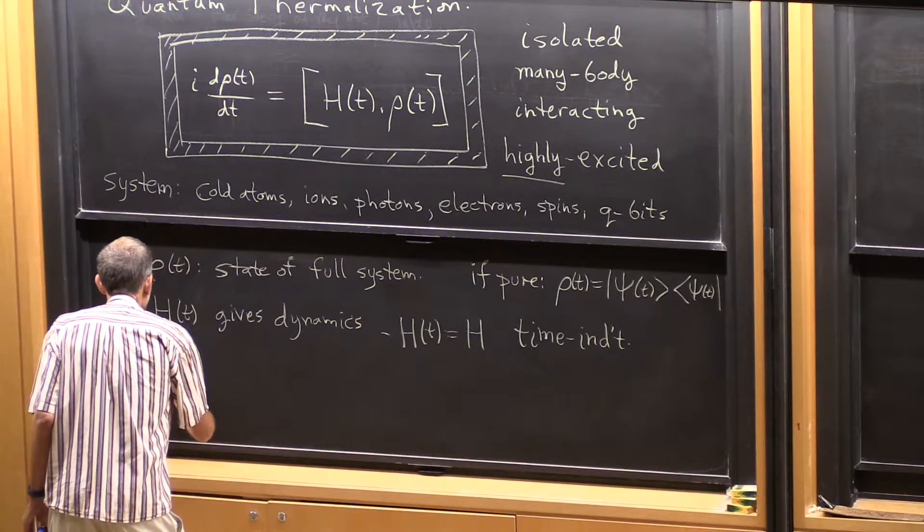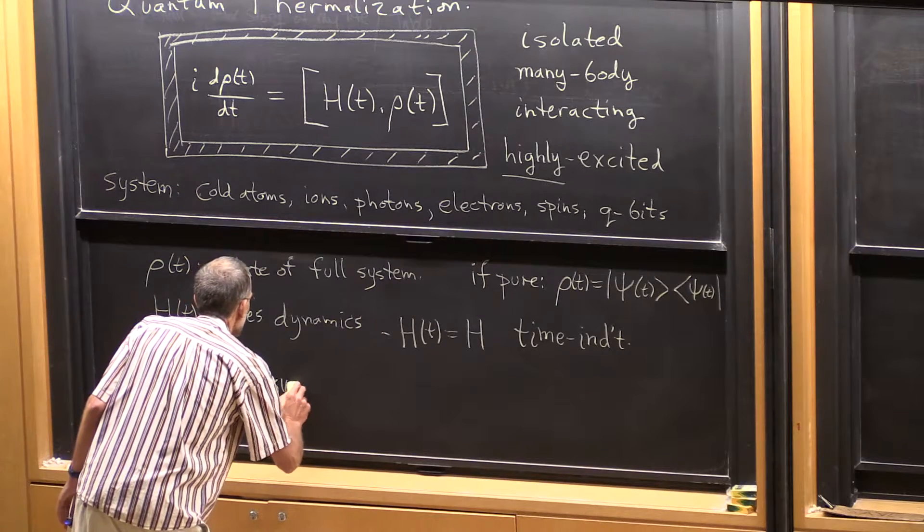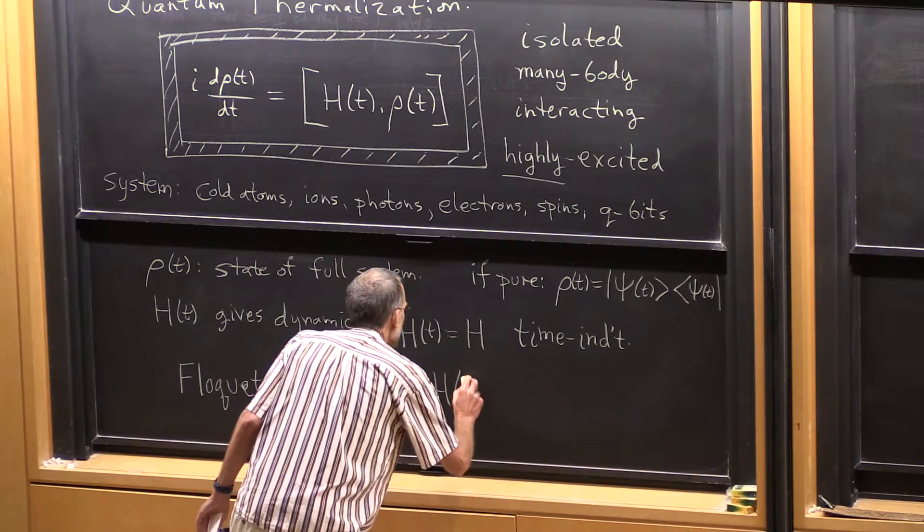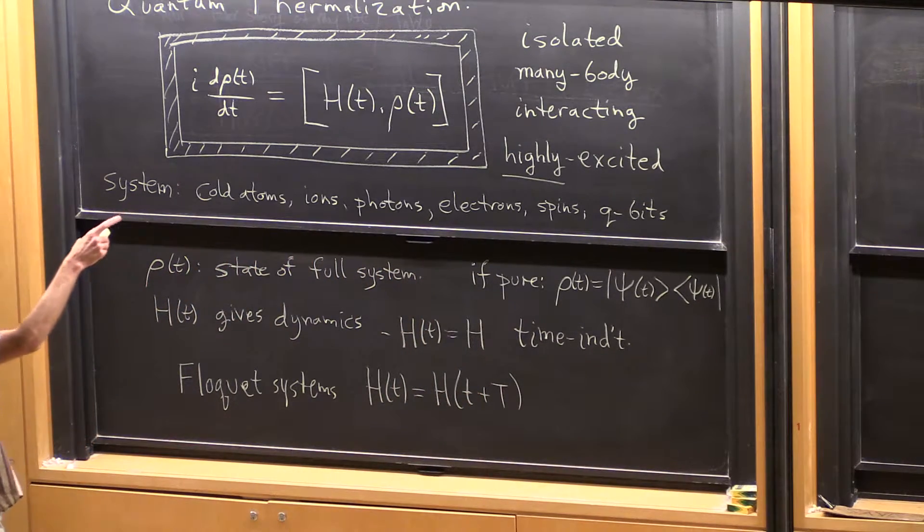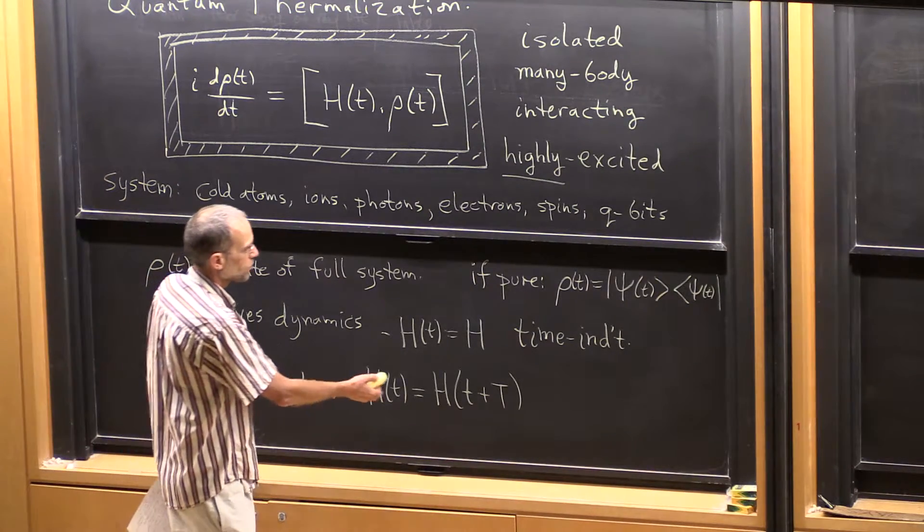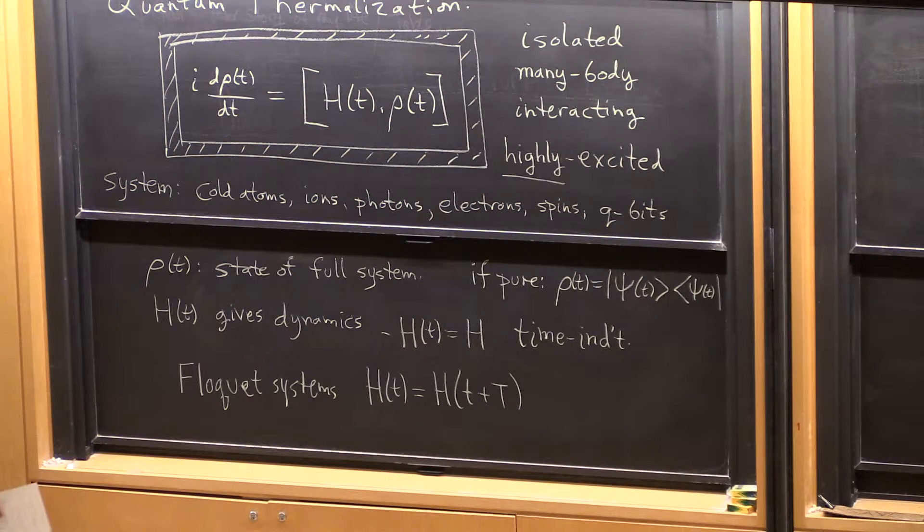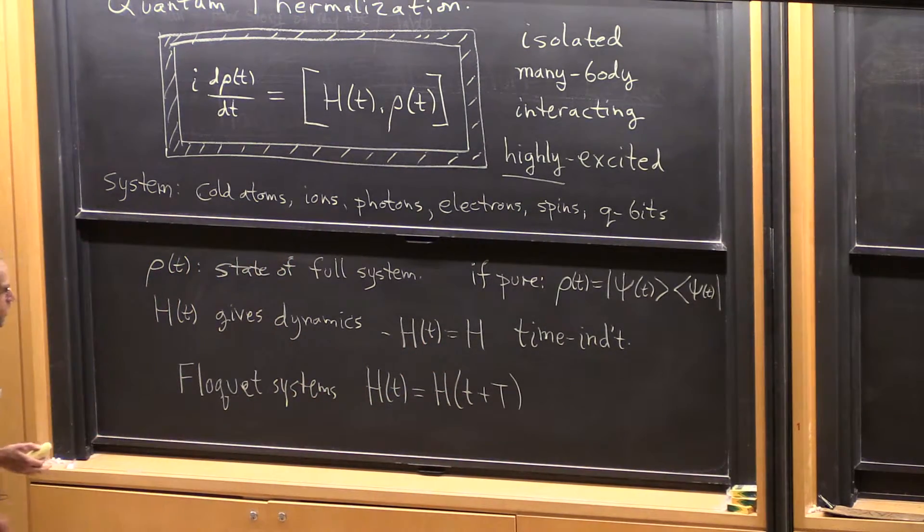But we also have the other case, so-called Floquet systems, which is where h of t is a periodic function of time. So the system isn't strictly isolated, it's being driven externally by some classical periodic drive. This could be just some RF source, microwaves, or typically in the laboratory it would be an oscillatory electric field. Not necessarily, it could be some modulation of the optical lattice.